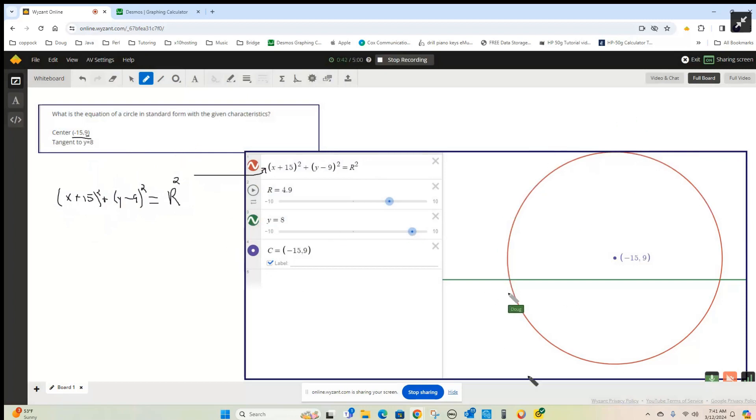Now here, this red graph is the graph of a circle with center at (-15, 9), but the red circle is not tangent to the line y equals 8. This is the line y equals 8.